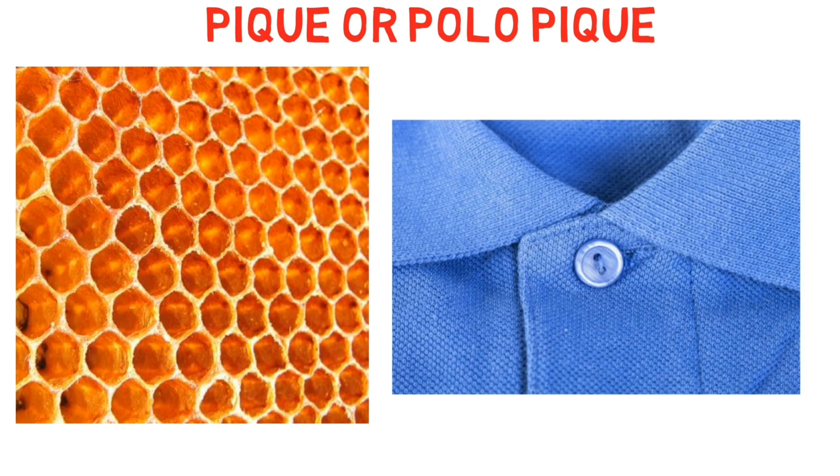Our next knitting type is piqué, or polo piqué. This knitting type has a honeycomb structure on the fabric and is very popular in t-shirts.